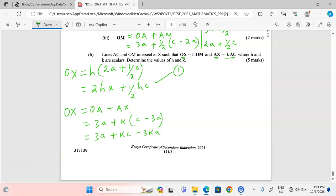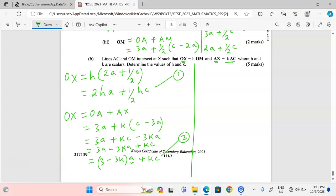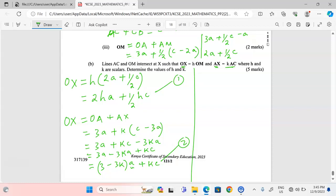We can group the parts which are having vector a together, so that we have 3a minus 3ka plus kc. Then we factor out vector a so that we have (3 - 3k)·vector a plus k·vector c. So this is the second expression of vector OX.